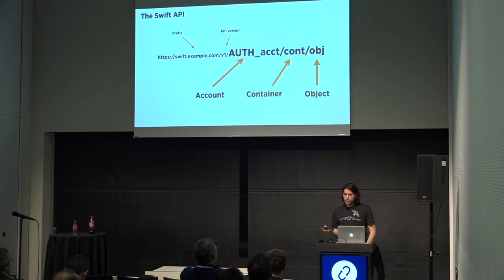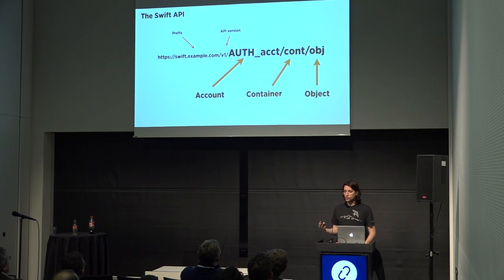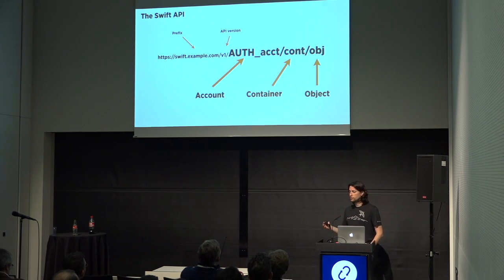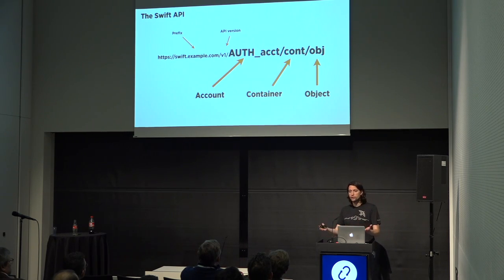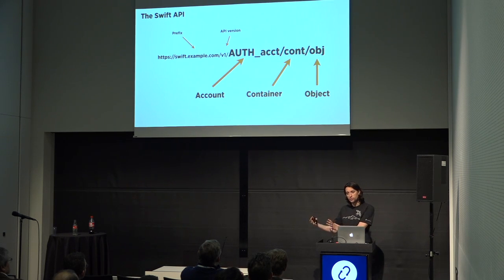The Swift API looks like this: all requests are basic HTTP verbs and response codes. There are three key parts of a Swift request: the account, the container, and the object. The account is something akin to a bank account — it's not necessarily tied one-to-one to a particular end user. It's a place where you put stuff, just like your own bank account: you put things in there, hopefully take out less than you put in, and you sometimes give somebody else access to it.